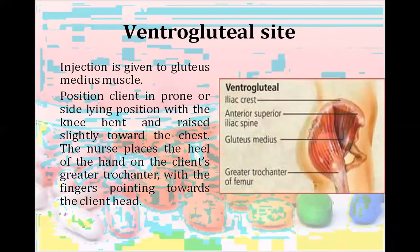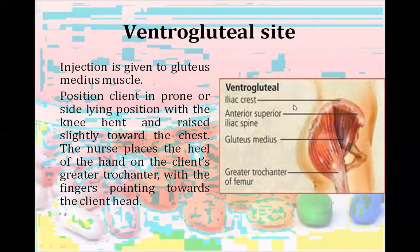For the ventrogluteal site, the injection is given to the gluteus medius muscle. We position the patient in prone or side-lying position with one knee bent and raised slightly towards the chest. The nurse places the heel of the hand on the client's greater trochanter — you can see the greater trochanter of femur, gluteal muscle, anterior superior iliac spine, and iliac crest in the diagram. After measurement, we give the injection.